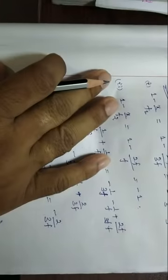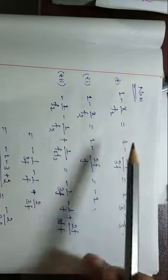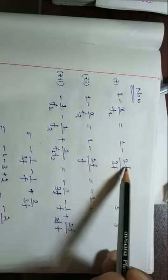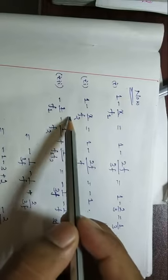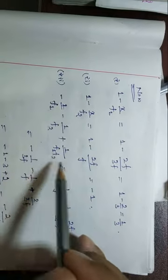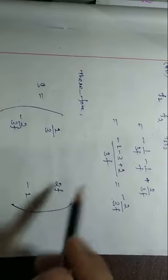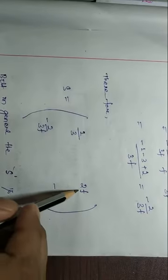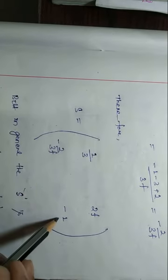Substituting all values into the matrix: (1 − x/f1) = 1 − 2f/3f = 1/3; likewise (1 − x/f2) = −1; and (−1/f1 − 1/f2 + 1/(f1·f2)) = −2/3f. So the system matrix becomes: [1/3, 2f; −2/3f, −1].